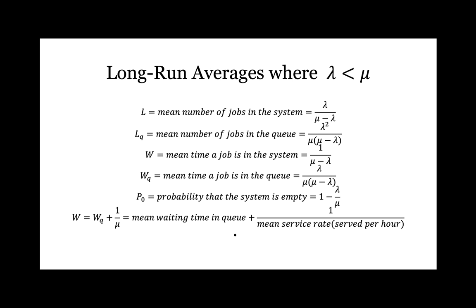When creating a queuing model of long-run averages where lambda is less than mu, the system has two components — queue and service area — which make up the system. Here are some key formulas: L equals the mean number of jobs in the system; L subscript q equals the mean number of jobs in the queue; W equals the average time a job is in the system; W subscript q is the average time a job is just in the queue. W equals the time in the queue plus 1 over mu, the mean service rate.